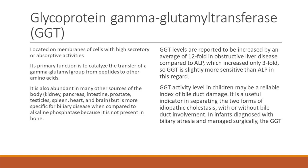Now we have to understand that we cannot pick up just one enzyme and then try to comment on the pattern of injury. We have to see SGOT, SGPT, ALP, gamma-GT, and also the bilirubin, and then simultaneously seeing all of these we determine the kind of injury the liver has — whether it is hepatocellular, whether it is cholestatic, or whether it is a mixed kind of injury.